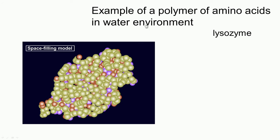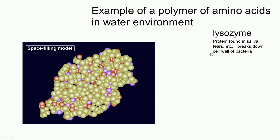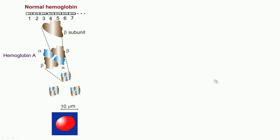This is an example of a polymer of amino acids in a water environment — a space-filling model of lysozyme in a water environment. This protein is surrounded by water. Lysozyme is actually a protein found in saliva and tears, and it also breaks down the cell wall of bacteria. The nature of the amino acids determines the nature of the proteins.